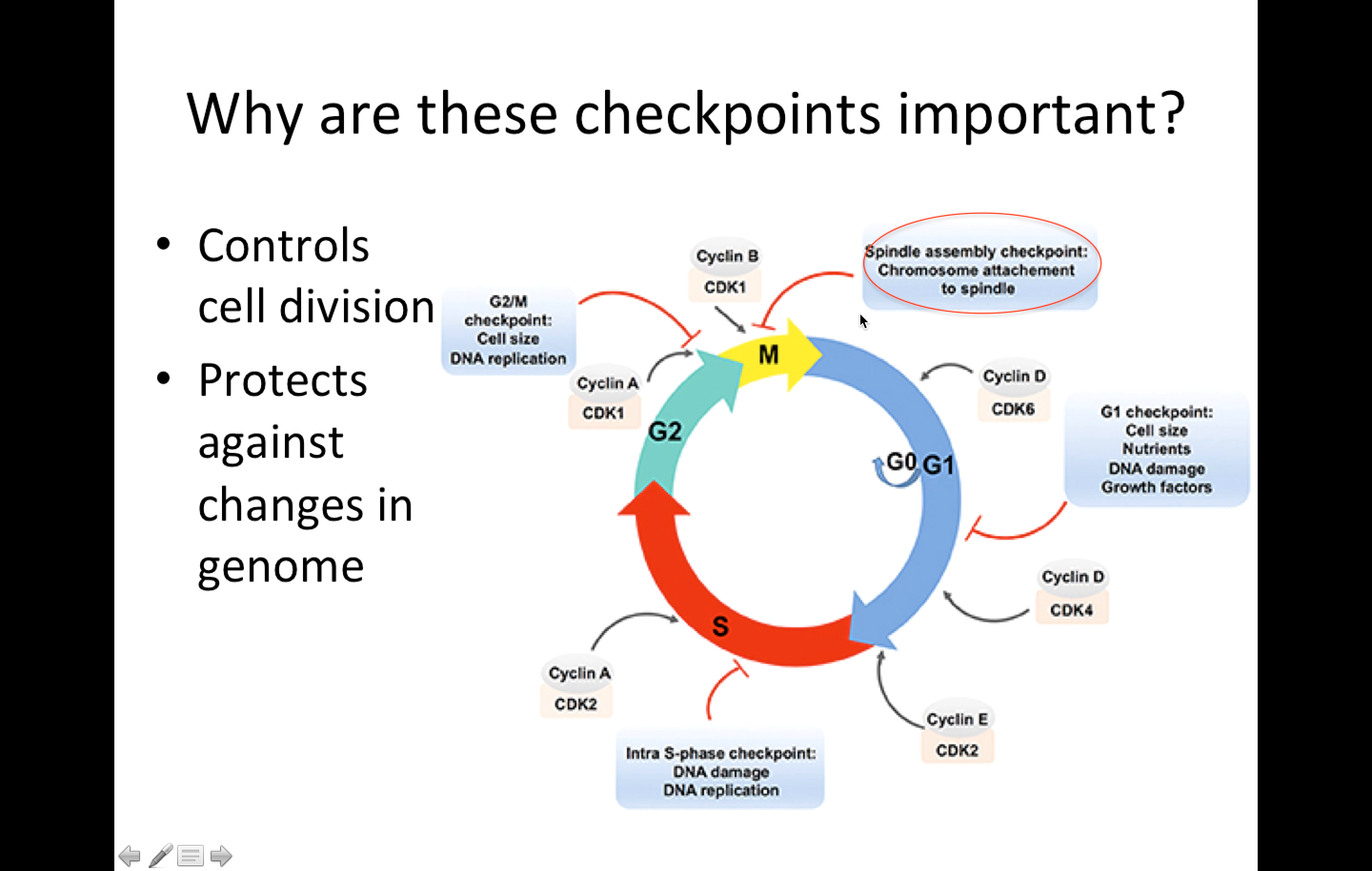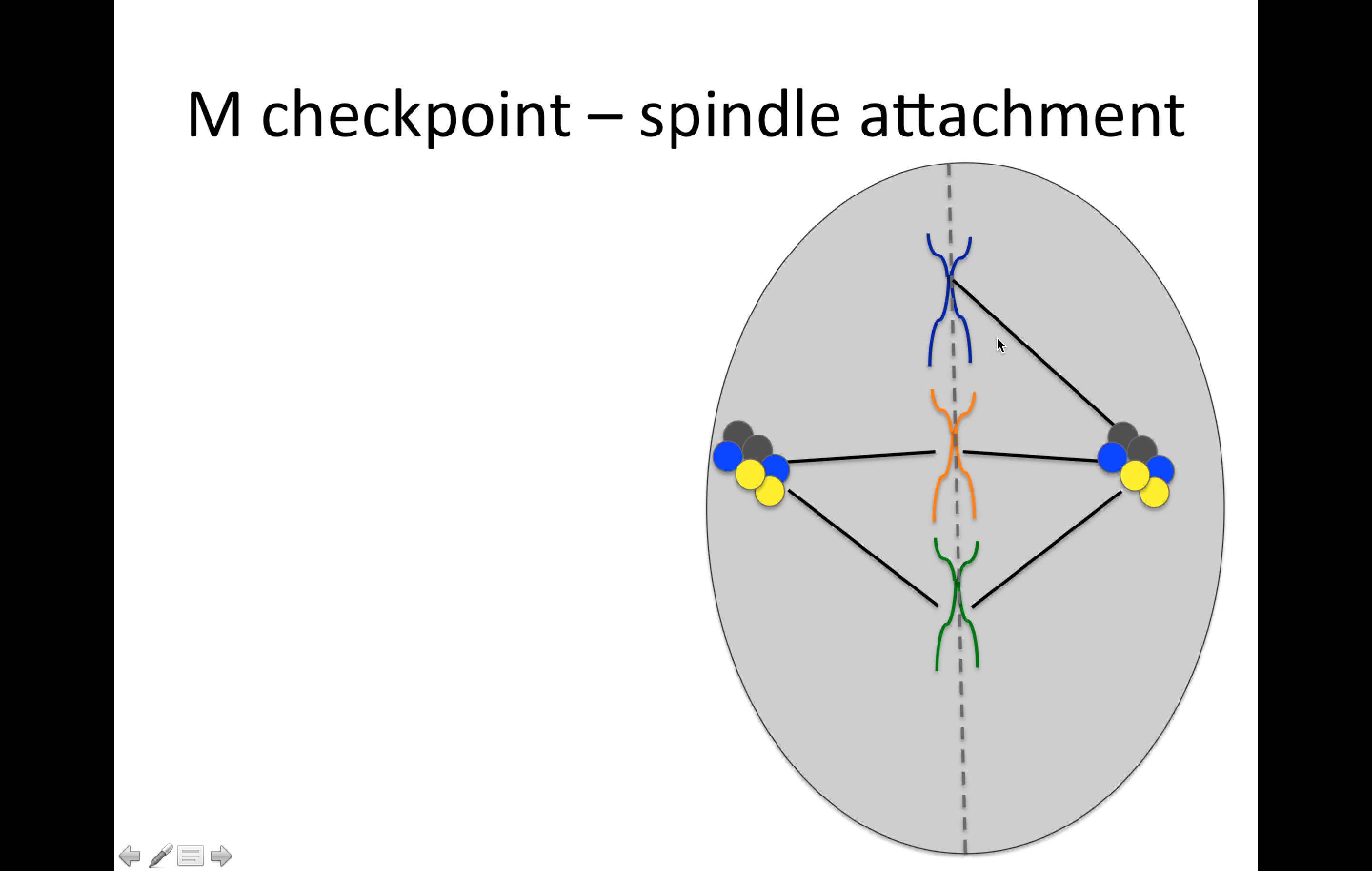In the M checkpoint, something that is checked for, is that the chromosomes are attached to the spindle. So let's see what we mean by that. So here we have the spindle, the microtubules, and we should have both chromosomes attached to them. And if we don't, if there's asymmetric attachment, then when the cells divide, we can end up with one cell that has two copies of this blue chromosome and one cell that has no copies of it.